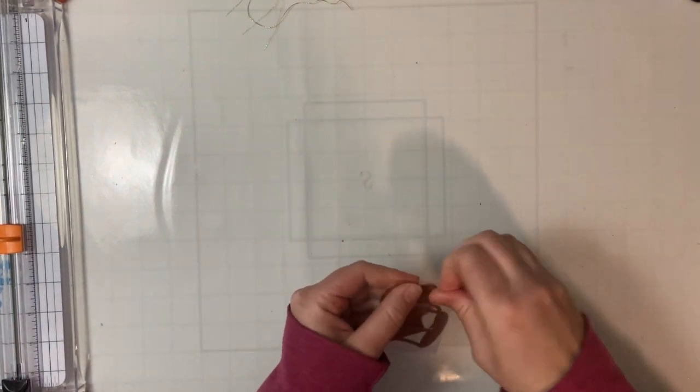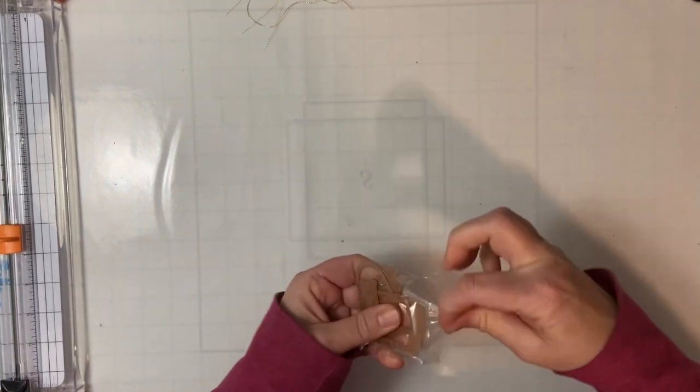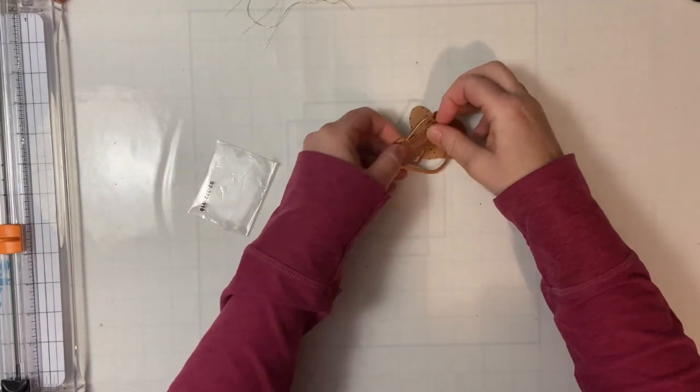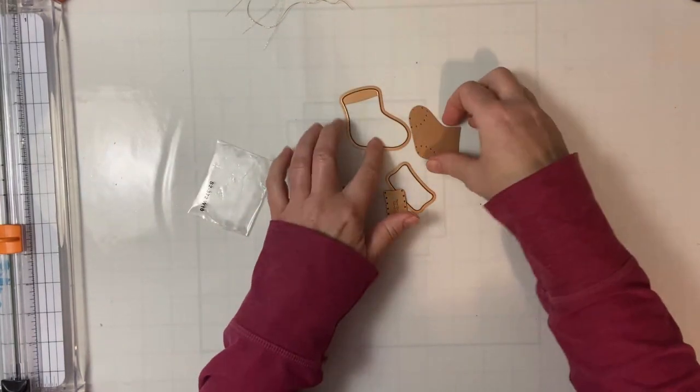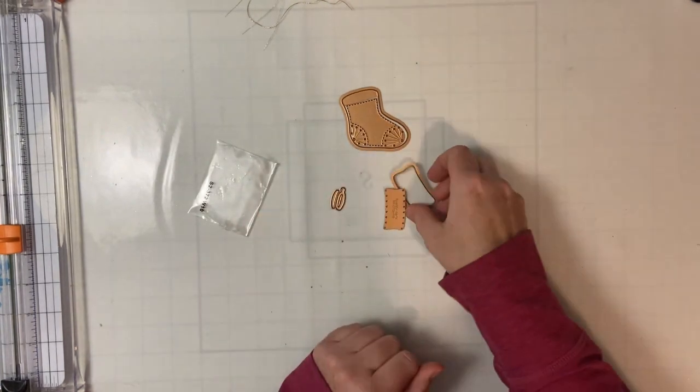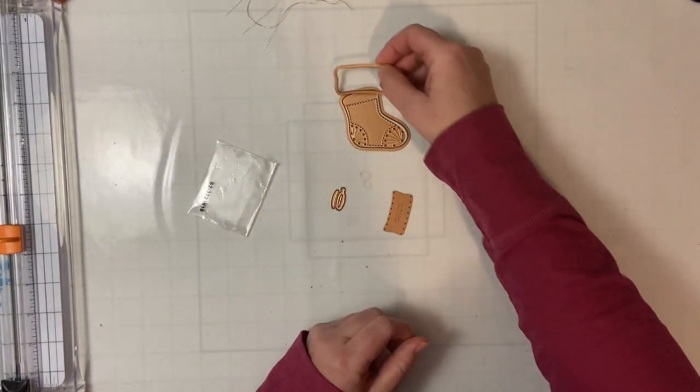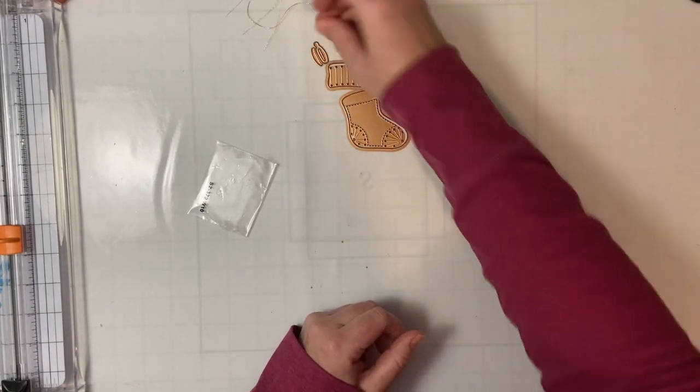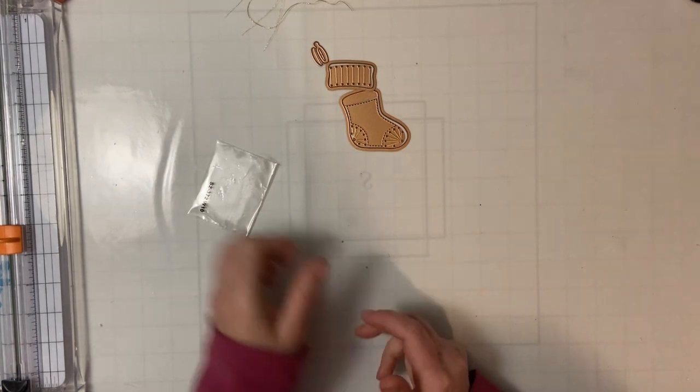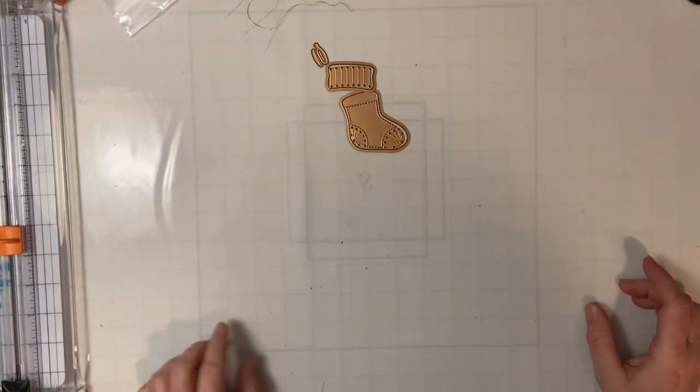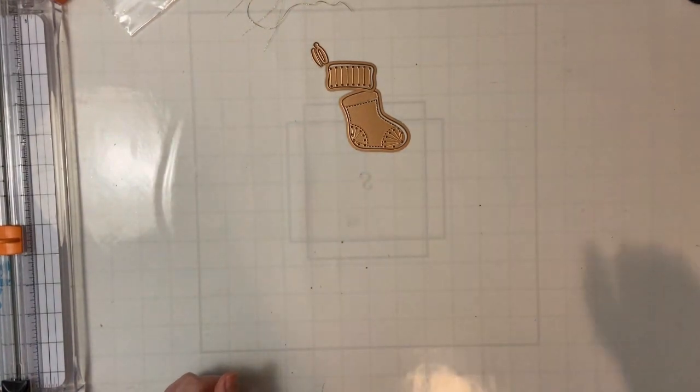Alright, let's take a look at the pieces that are in this. So we've got the outline of the stocking, the inside part where you're stitching, we've got the top which also has some stitching and then a little hanger piece. So like before I'm going to gather my supplies and then we will make something.